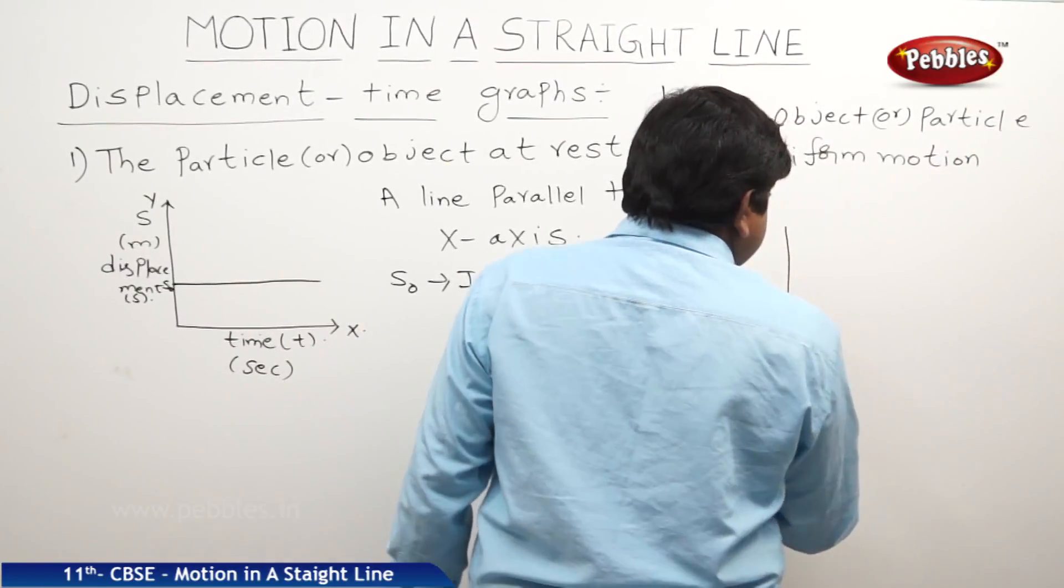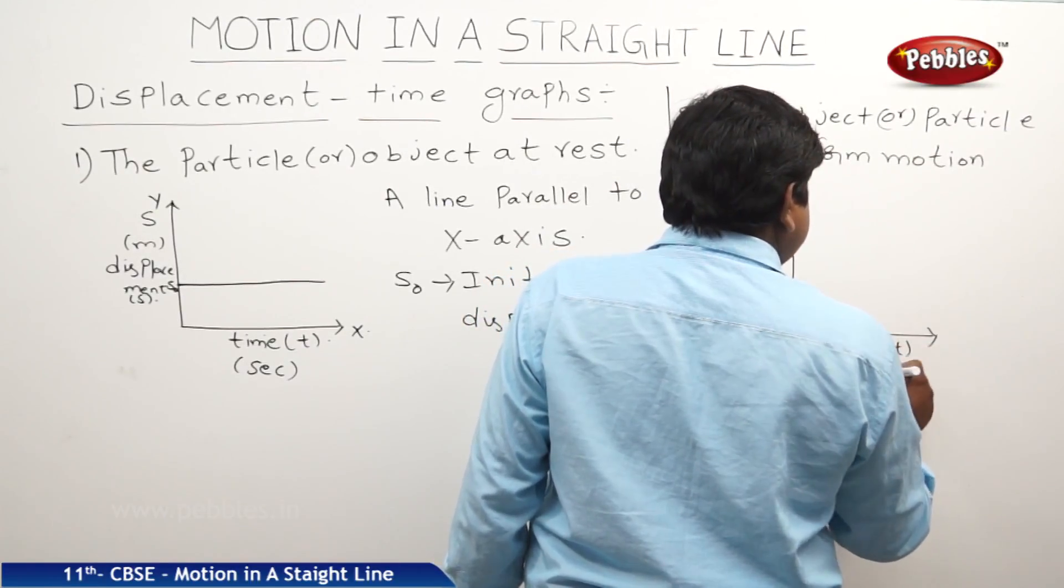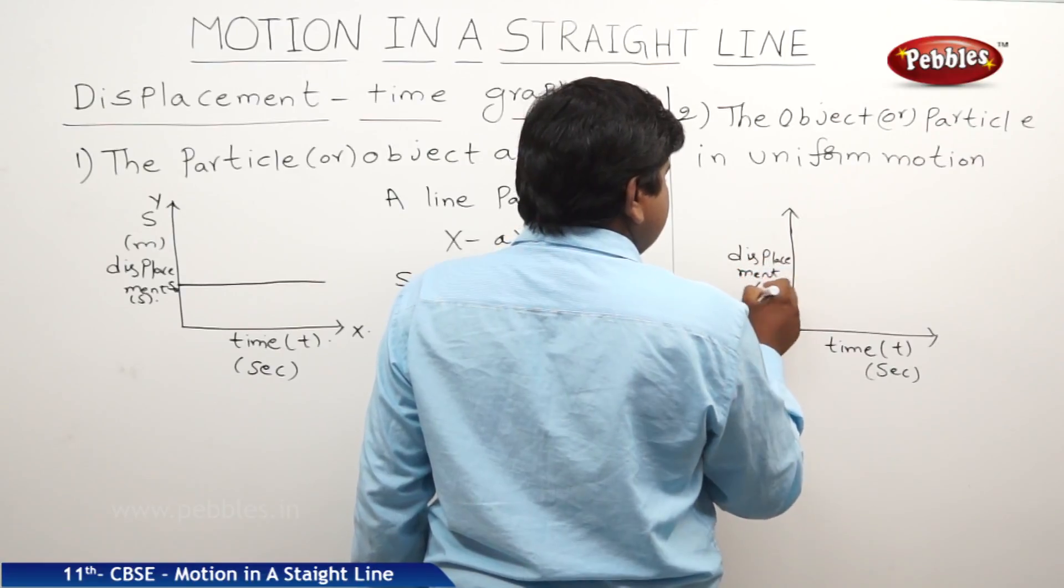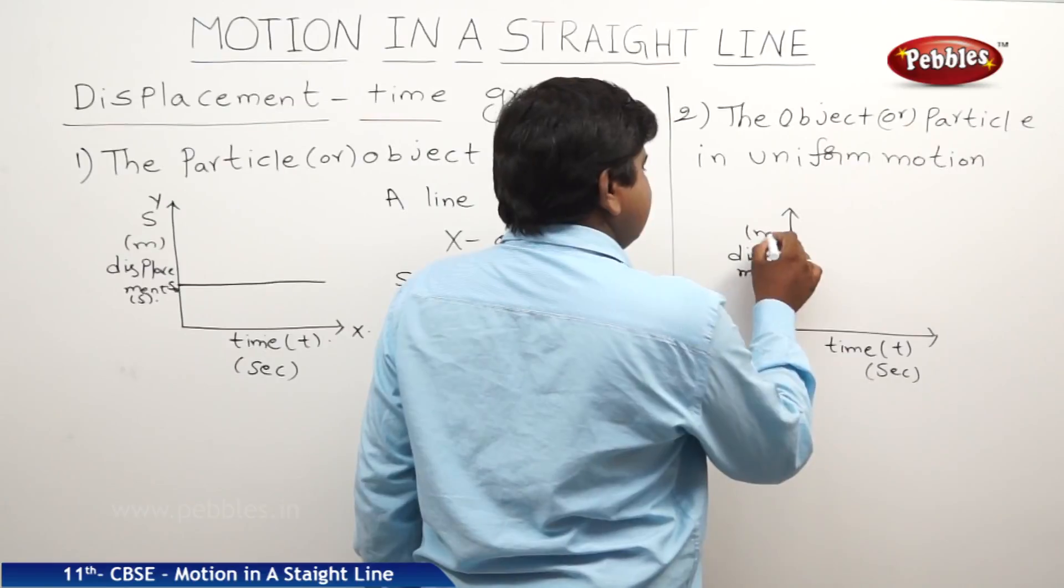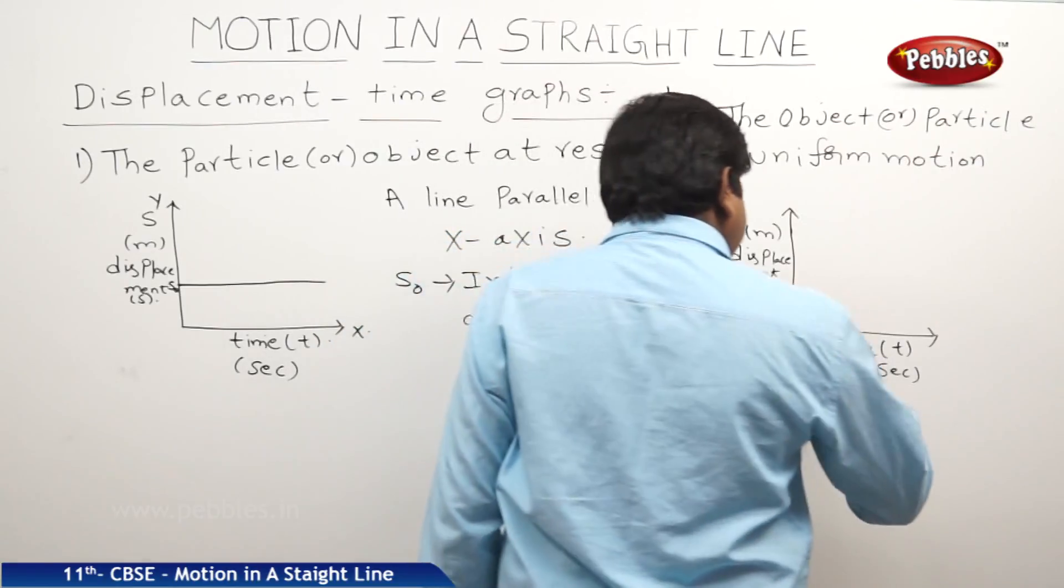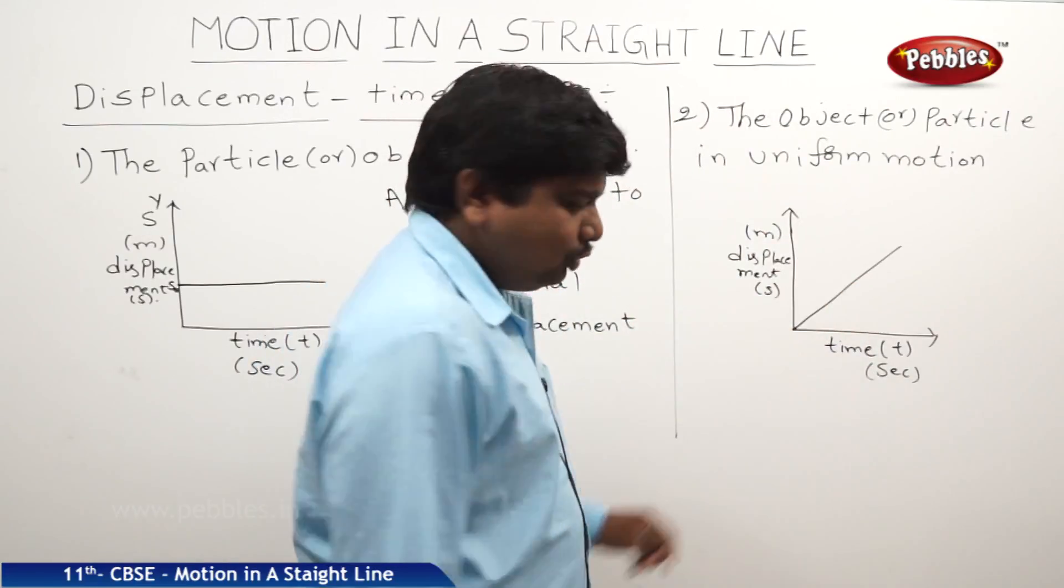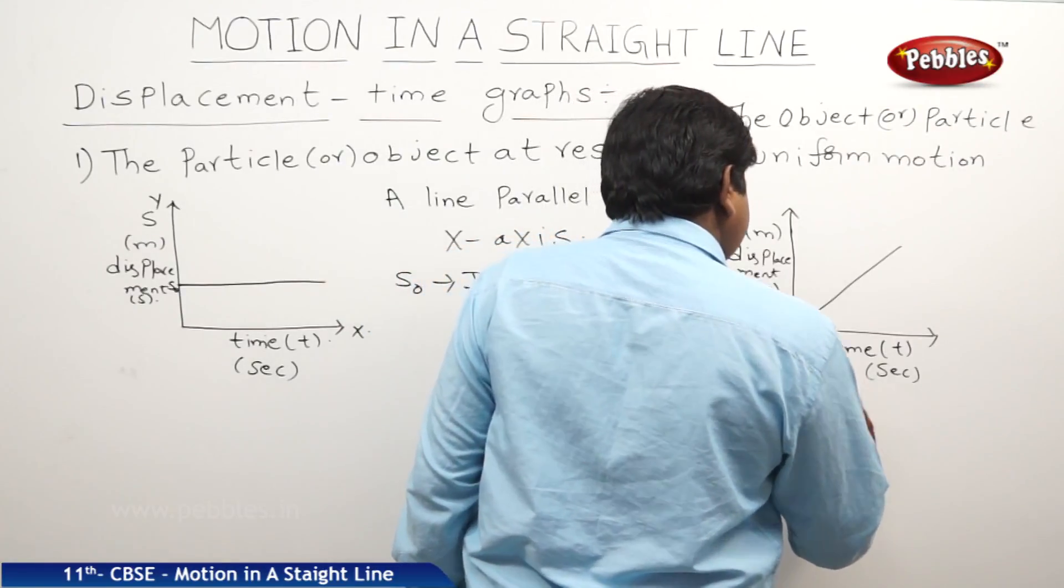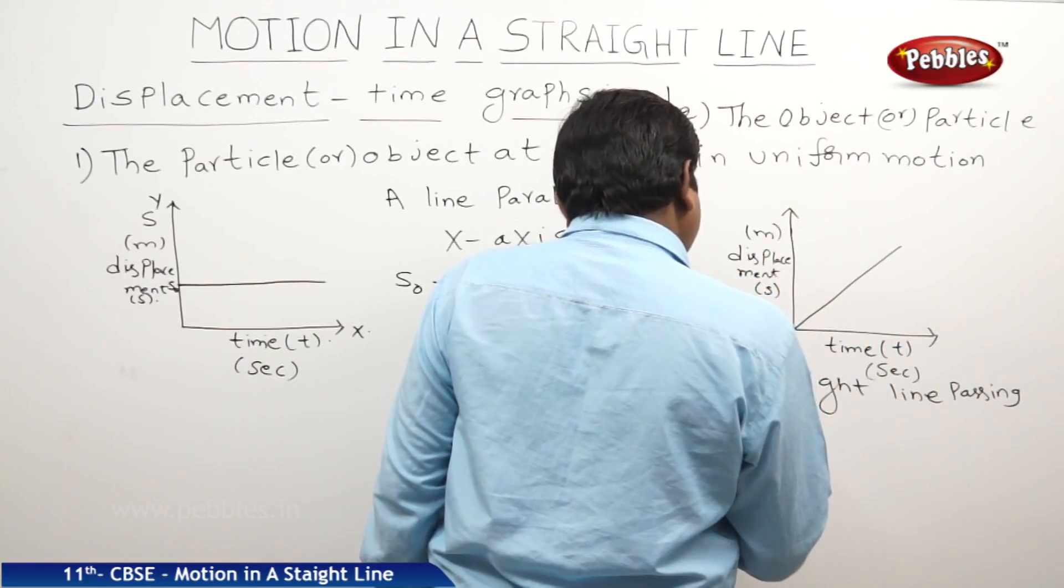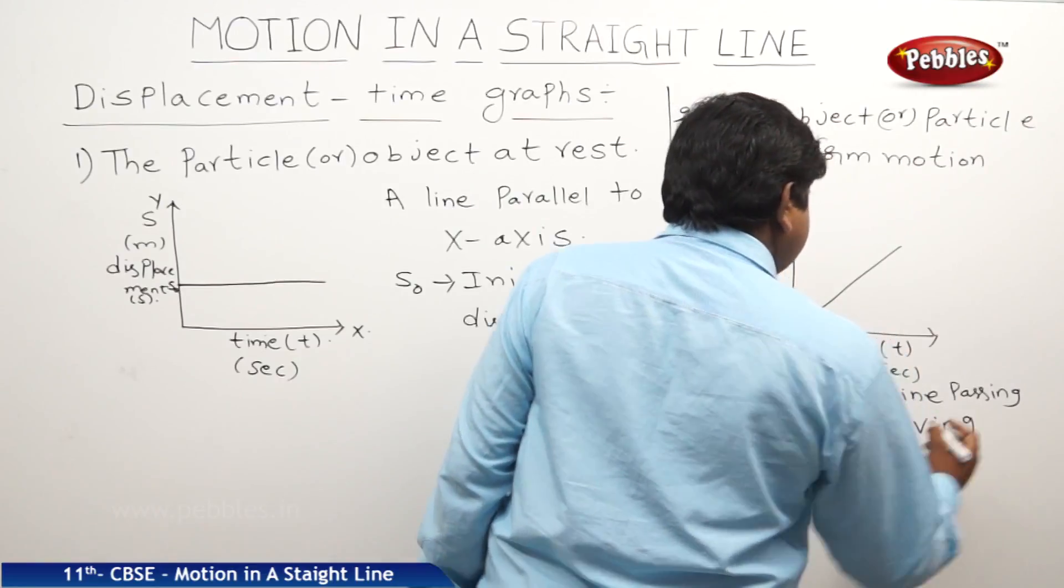In this case, this is the model graph. This is time t second. This is displacement. This is in meters. The object is in uniform motion which starts from zero velocity. Then, you can say a graph like this. Means a straight line passing through origin having positive slope.